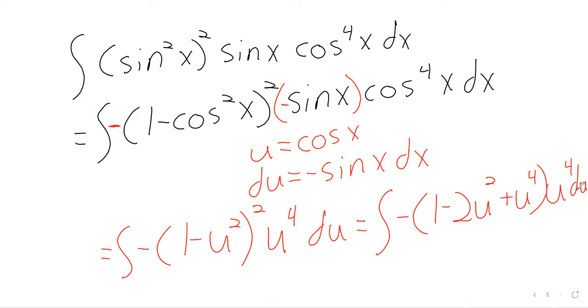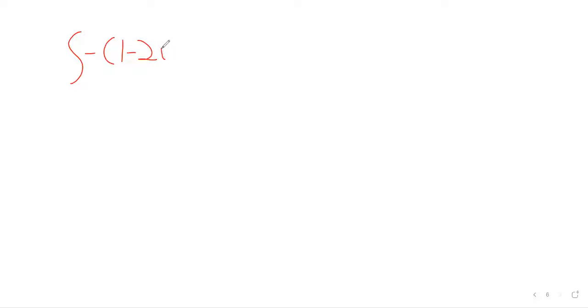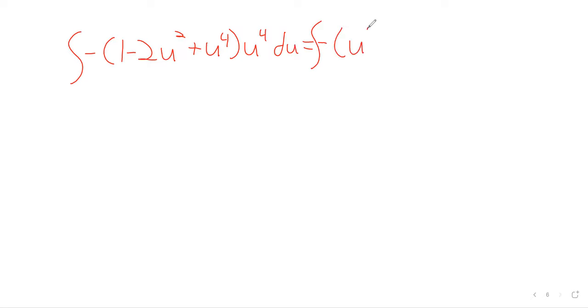We expand (1 minus u squared) squared: one times one is one, one times negative u squared is negative u squared — we get that twice from inner and outer — and u squared times u squared is u to the fourth. So (1 minus u squared) squared equals one minus two u squared plus u to the fourth. Times u to the fourth gives negative u to the fourth minus two u to the sixth plus u to the eighth.